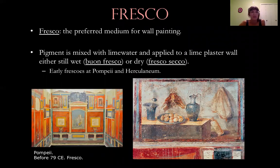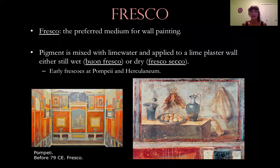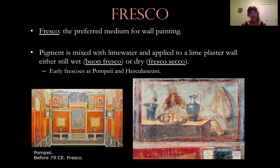Now let's talk about frescoes. Frescoes were the preferred medium for wall painting. This is where pigment is mixed with lime water and applied to a lime plaster wall. There are two different types of fresco: buon fresco and fresco secco. These are Italian terms — buon means good in Italian and secco means dry. Artists clearly saw buon fresco, the wet fresco, as the better one, as they named it the good fresco. Here are some early frescoes from Pompeii and Herculaneum, two ancient Roman towns.